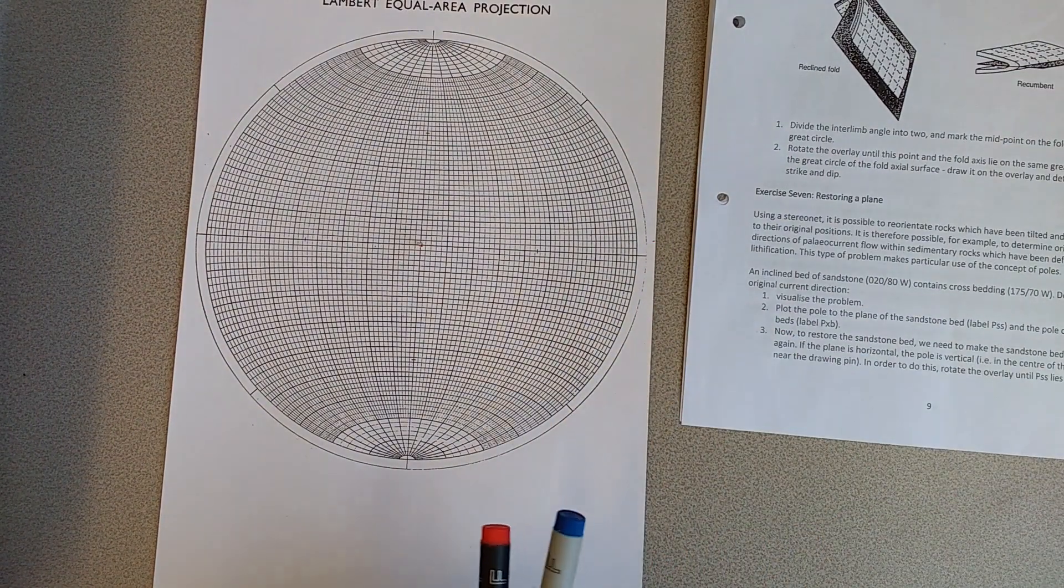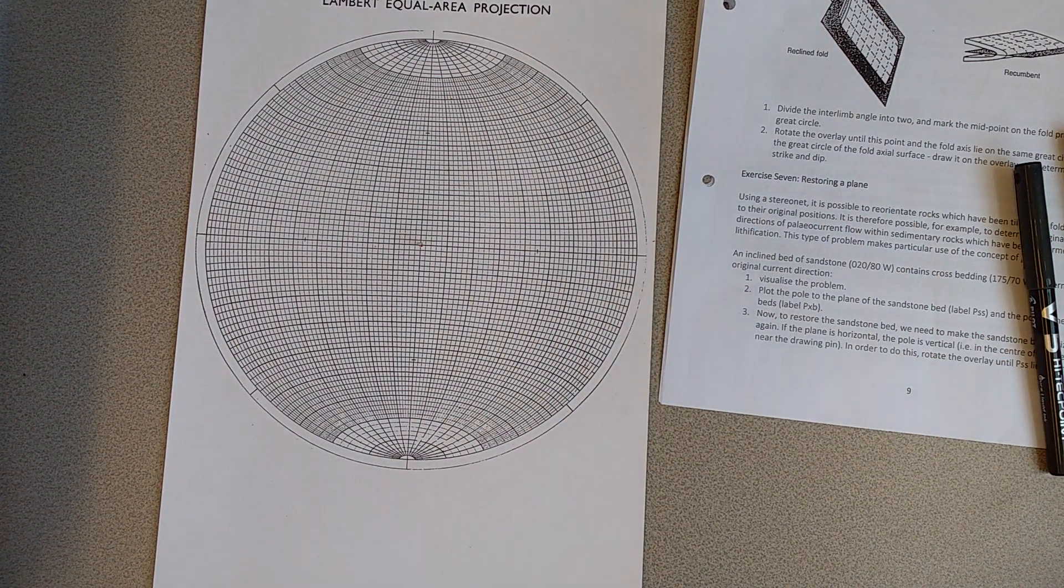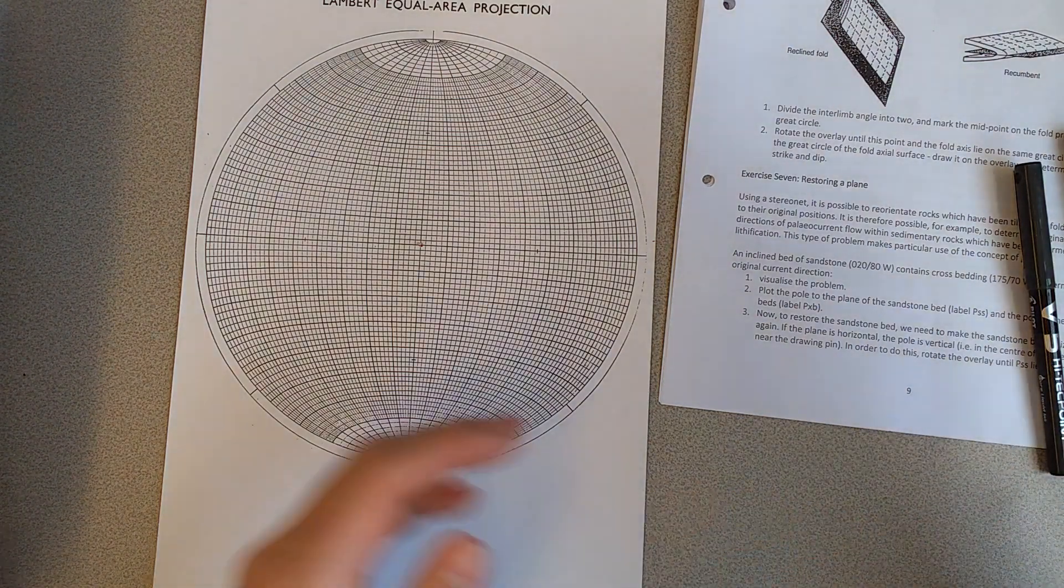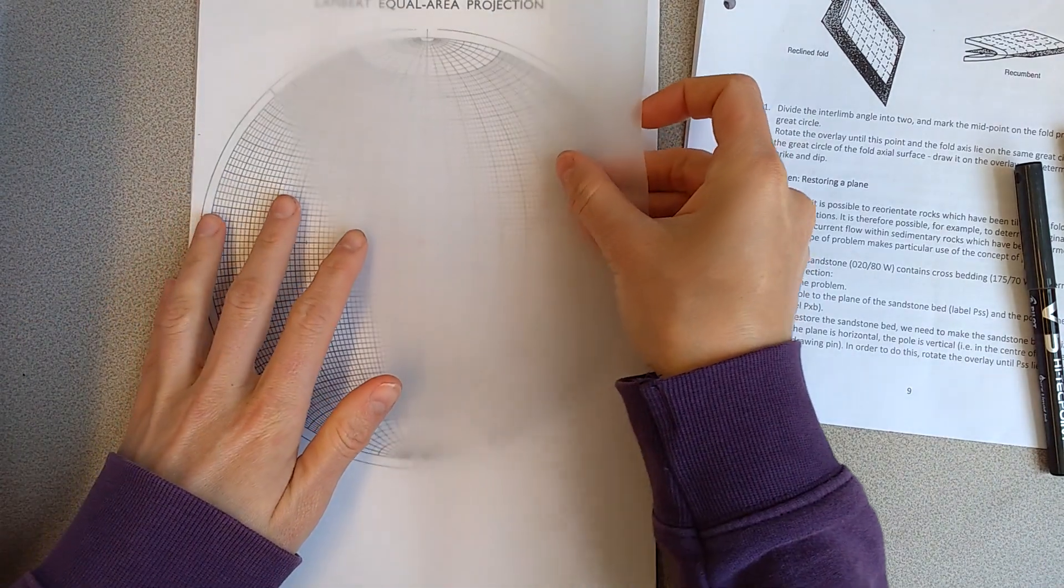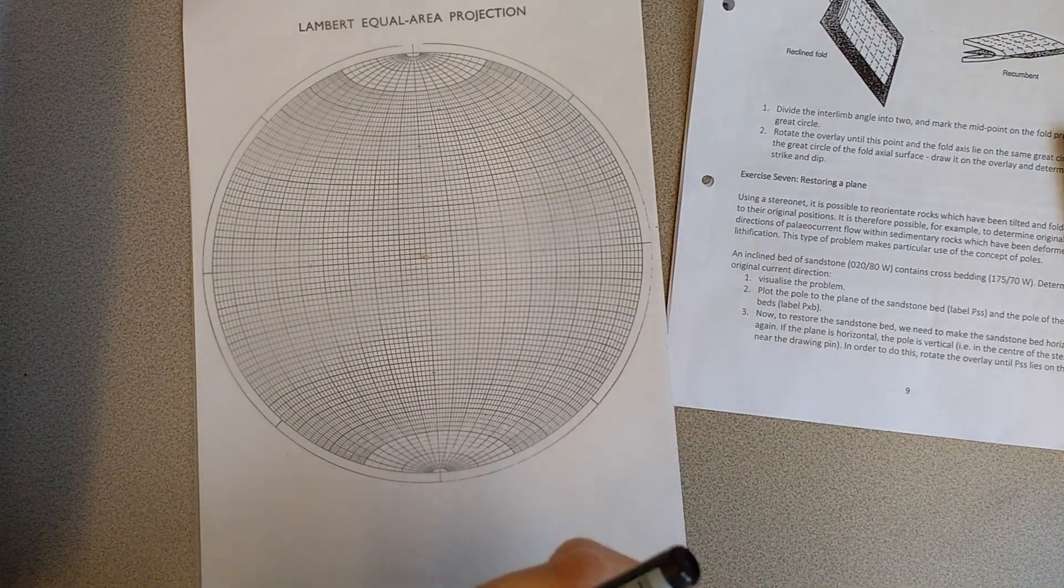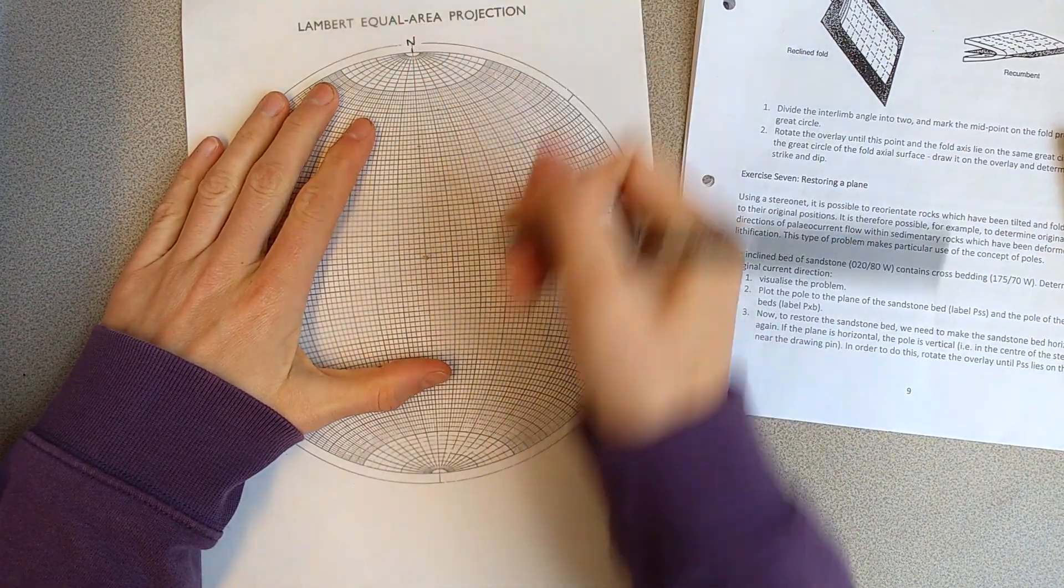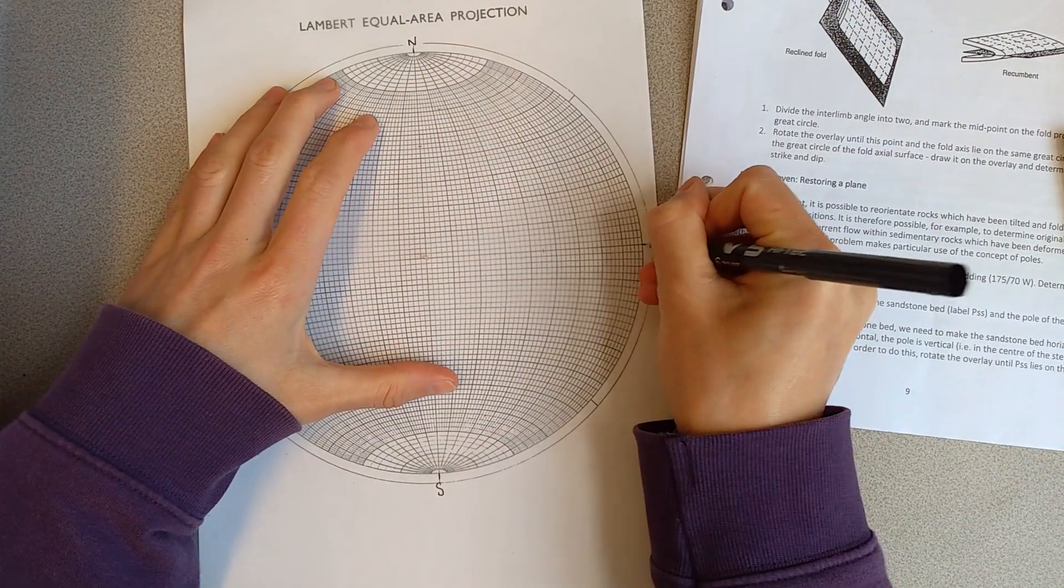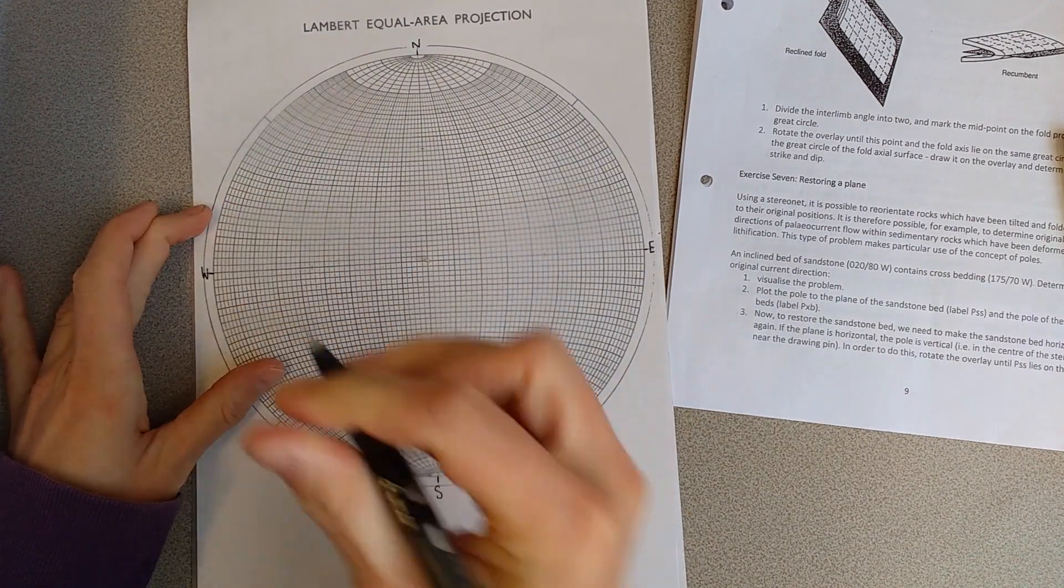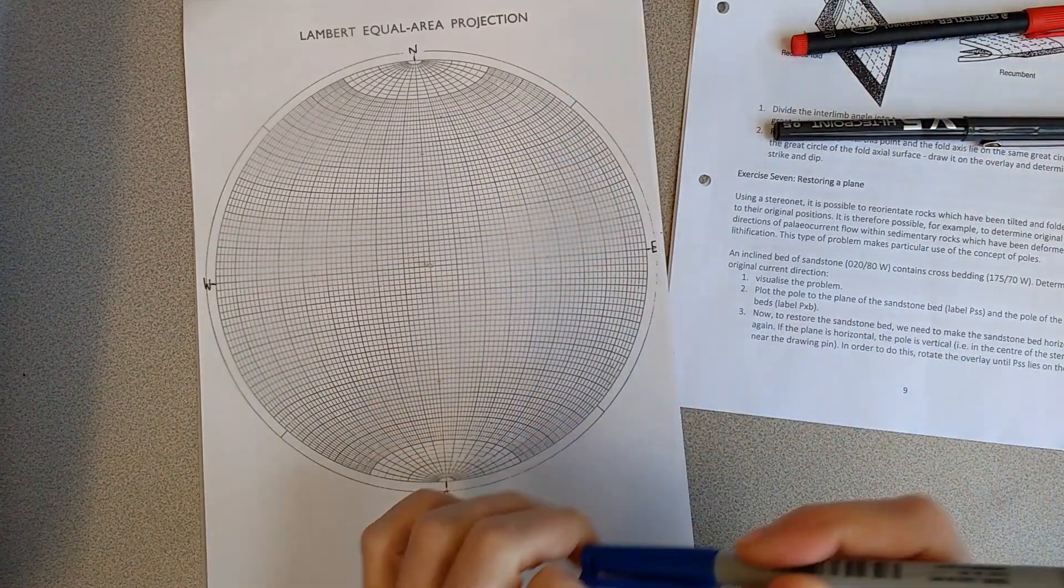I'll first of all get my piece of tracing paper and put that on the stereonet. I'm going to mark north, south, east and west on my stereonet and then the first thing to do is plot the pole to the plane of the sandstone bed.